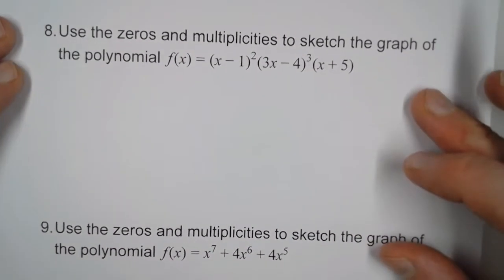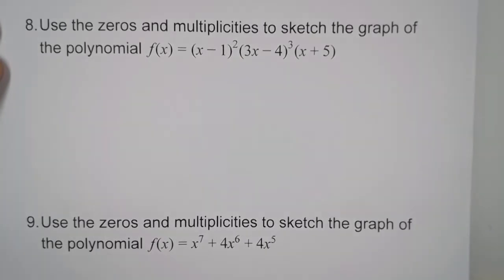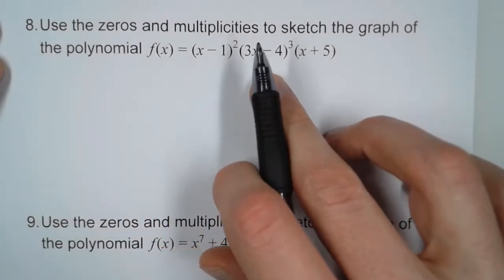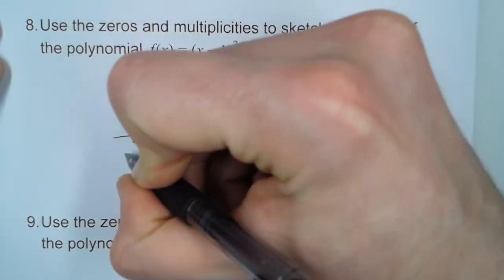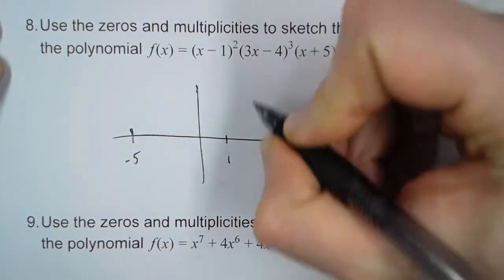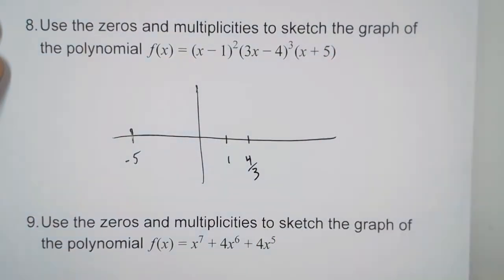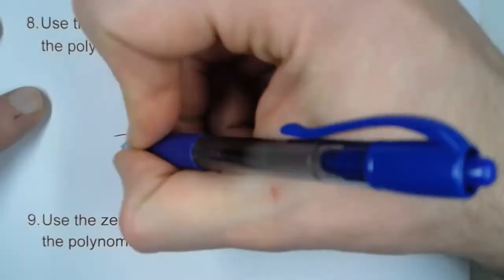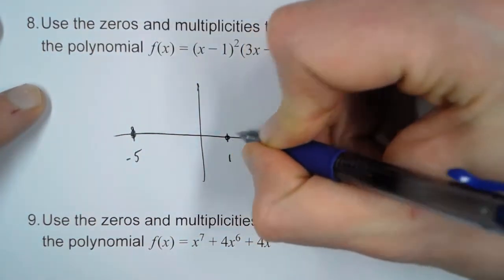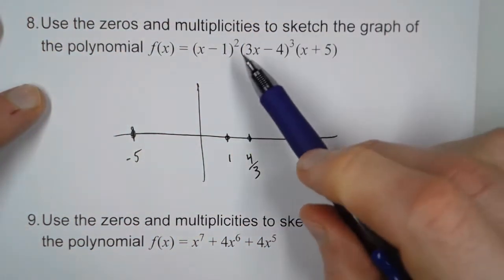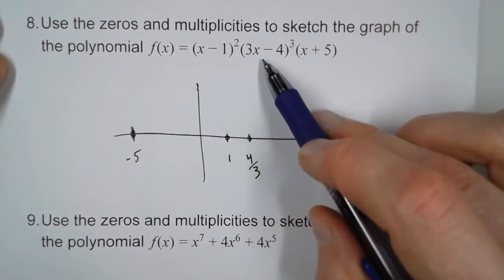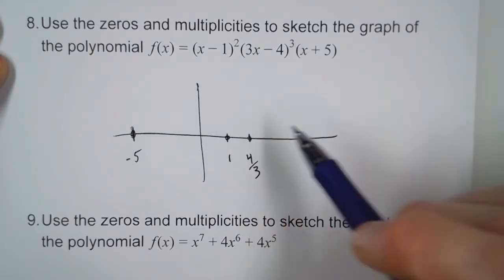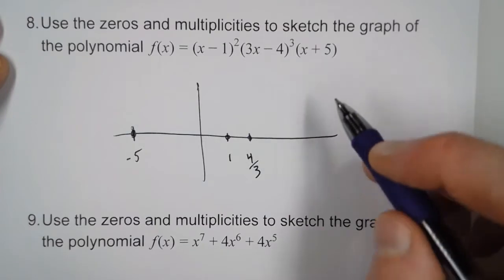Number eight: use the zeros and the multiplicities to sketch this graph. We have three zeros: at one, at four-thirds, and at negative five. So let's mark those on the x-axis. At these three points the graph touches the x-axis, but each with individual multiplicities. At one, it's going to touch like x-squared — it hits and bounces off. At three x minus four to the third, it's going to hit like x-cubed. And at x plus five, it's going to just cross right through.